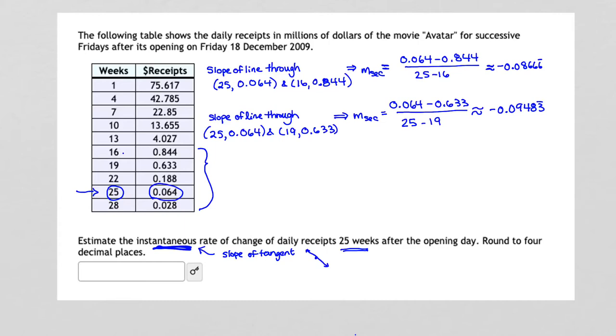Let's continue. Let's look at weeks 25 and 22 and calculate the slope of the line through those two points. And when we calculate the slope of the line through those two points, or in other words, the slope of that secant line, we get negative 0.04133.